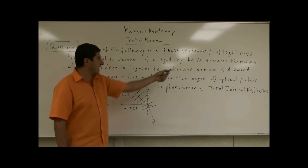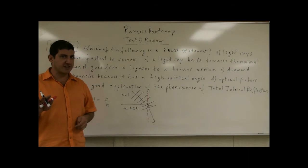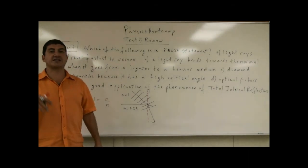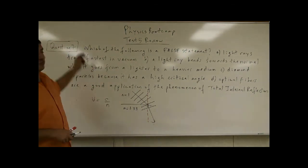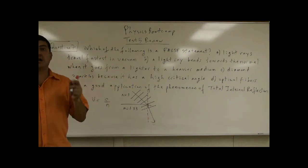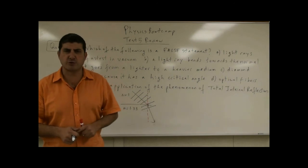C: diamond sparkles because it has a high critical angle. That one's tricky—it's actually the opposite. Diamond sparkles because it has a low critical angle, very small. In the previous question, question six, I talked about the diamond and why it sparkles. I showed you what the critical angle of diamond is—it came out to be about 24 degrees.